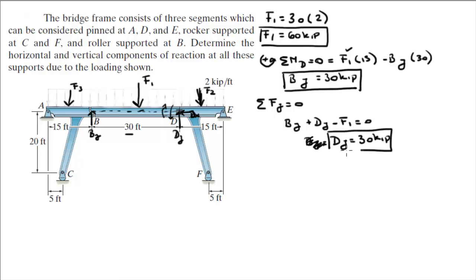So, you already found this one and that one, and you already found DX too. Sum of the forces in DX is equal to 0, so DX is equal to 0. There's no other force acting on this member.